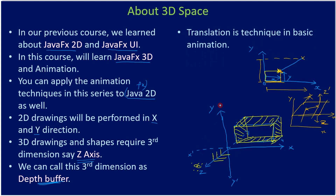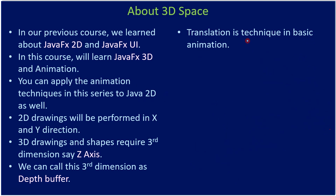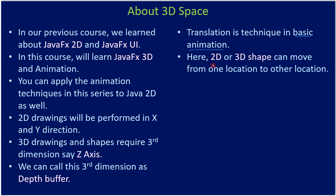Translation is a basic animation technique. Translation means moving an object from one location to another location — a 2D or 3D shape can move from one location to another. For example, if you have a circle or a cube and it is moving from one location to another, we call this translation. In 2D space it shifts some X units and some Y units, and if it is in the Z direction it will also be shifted in Z direction.